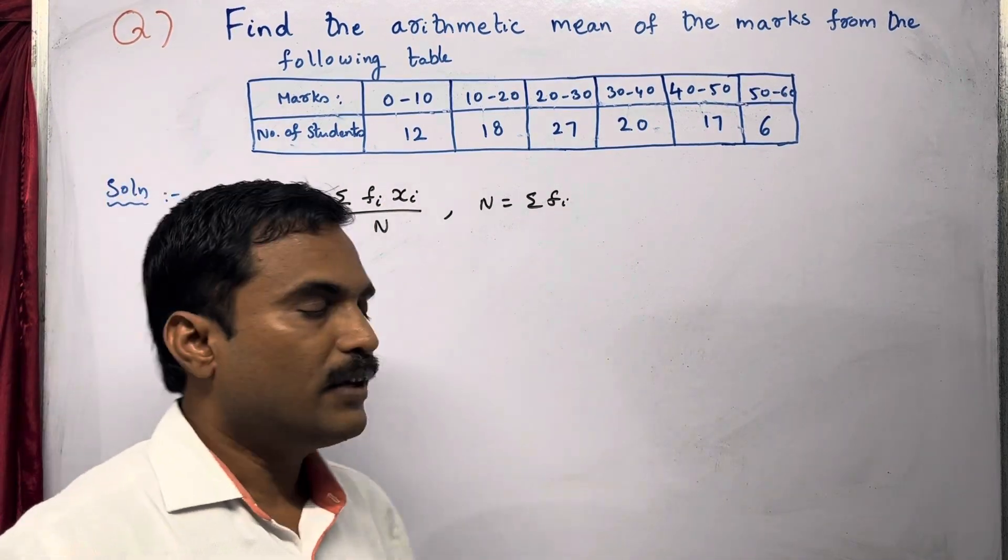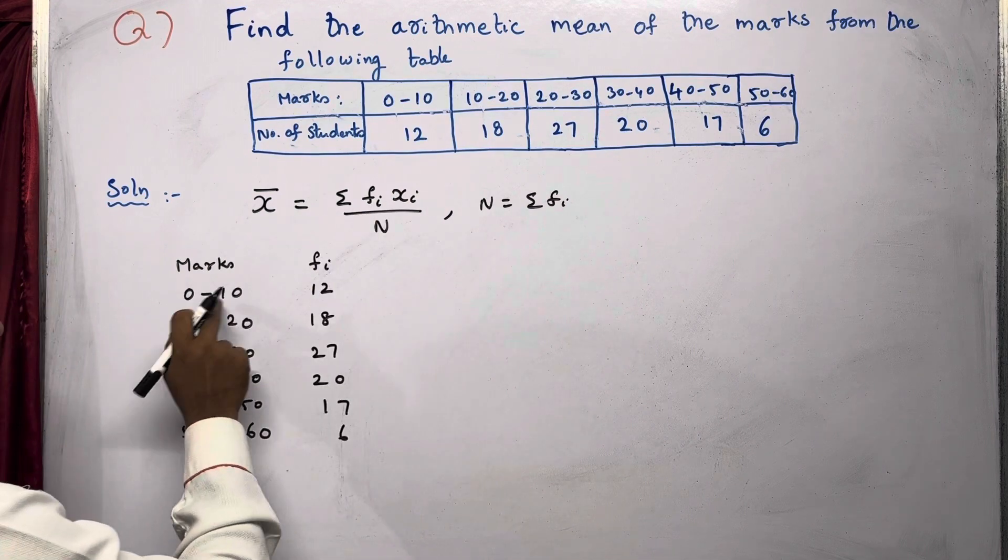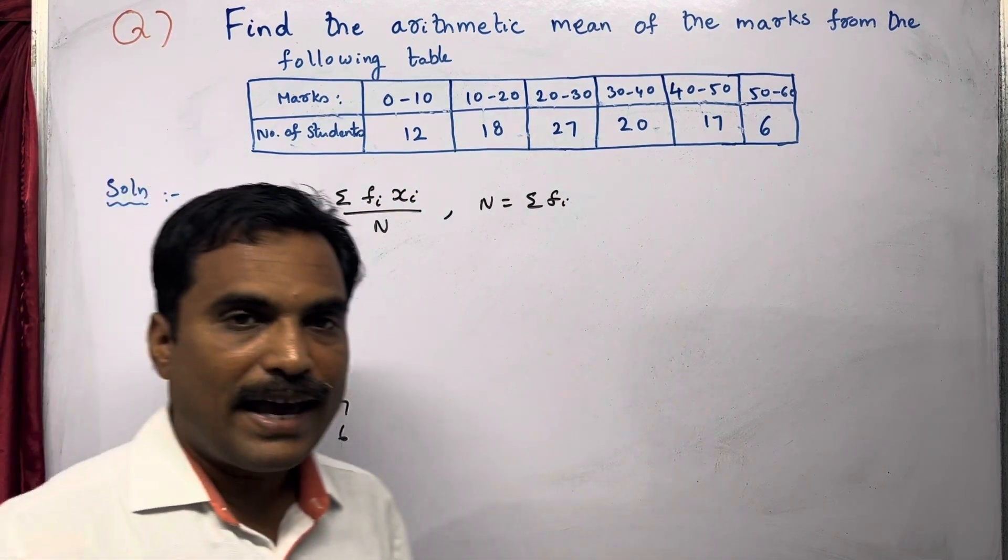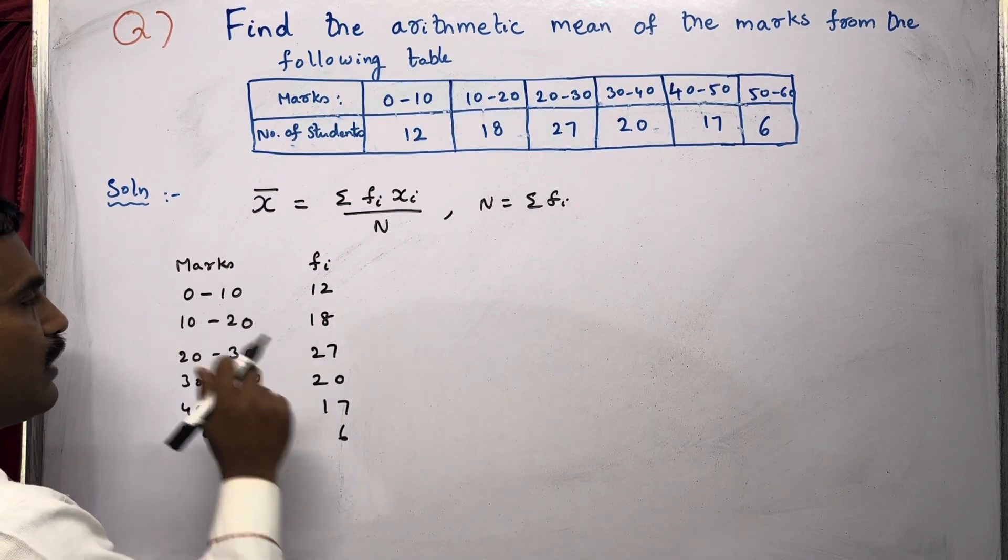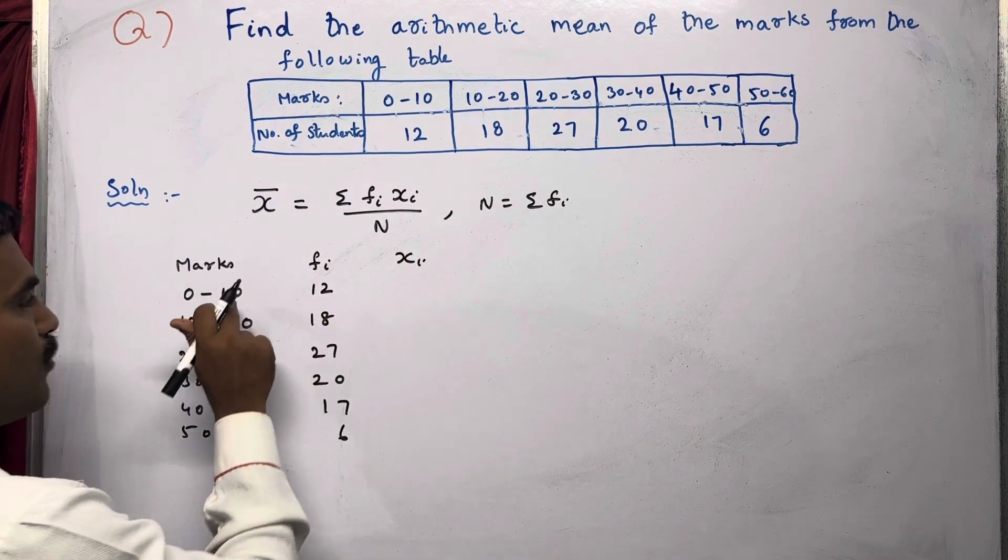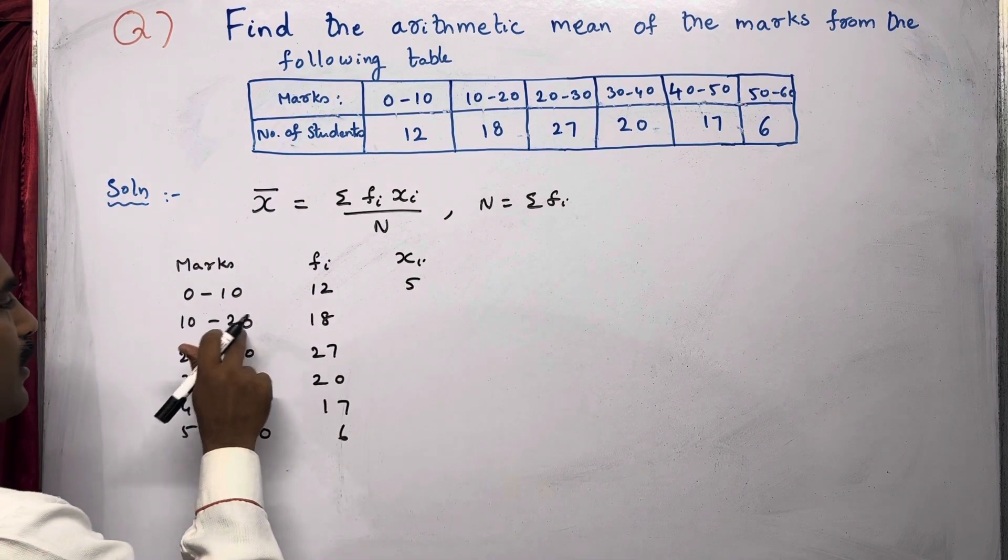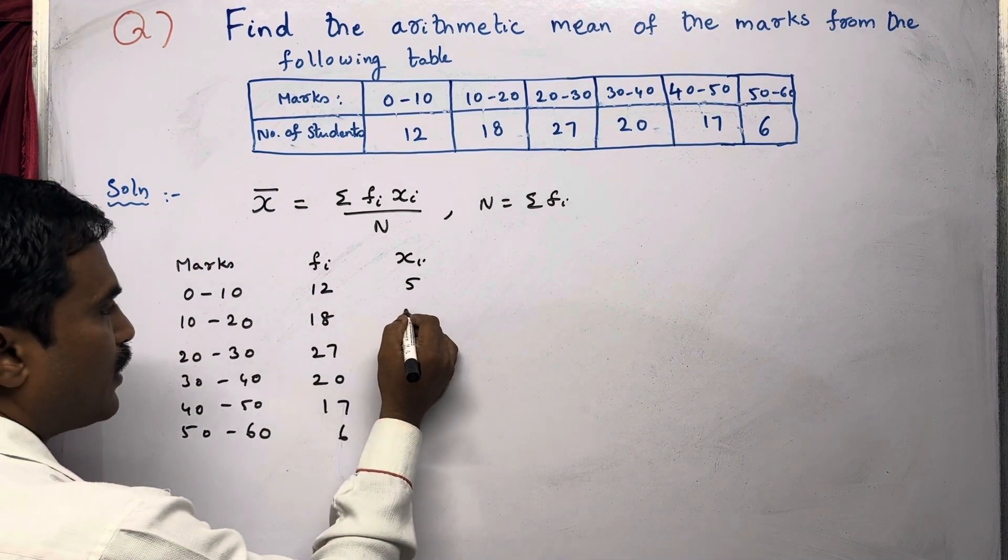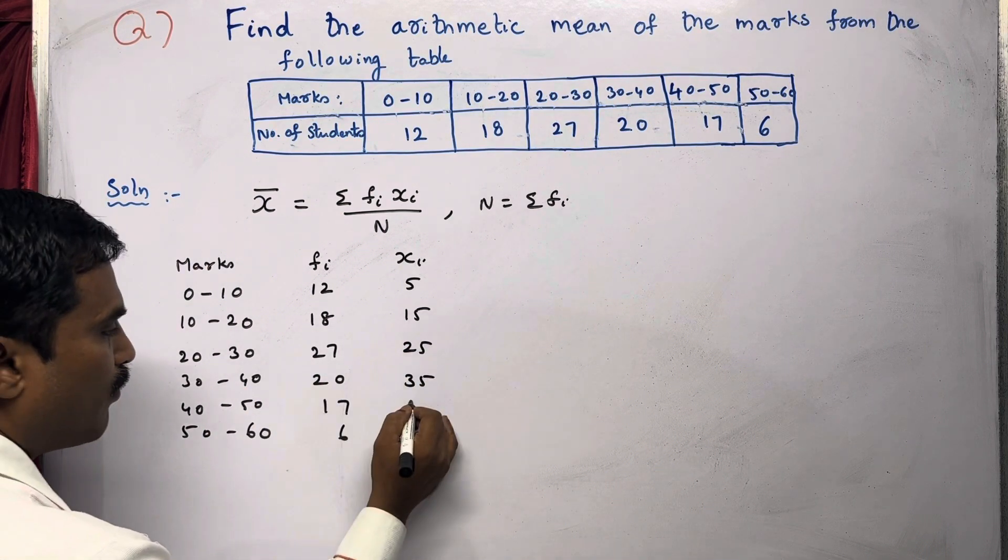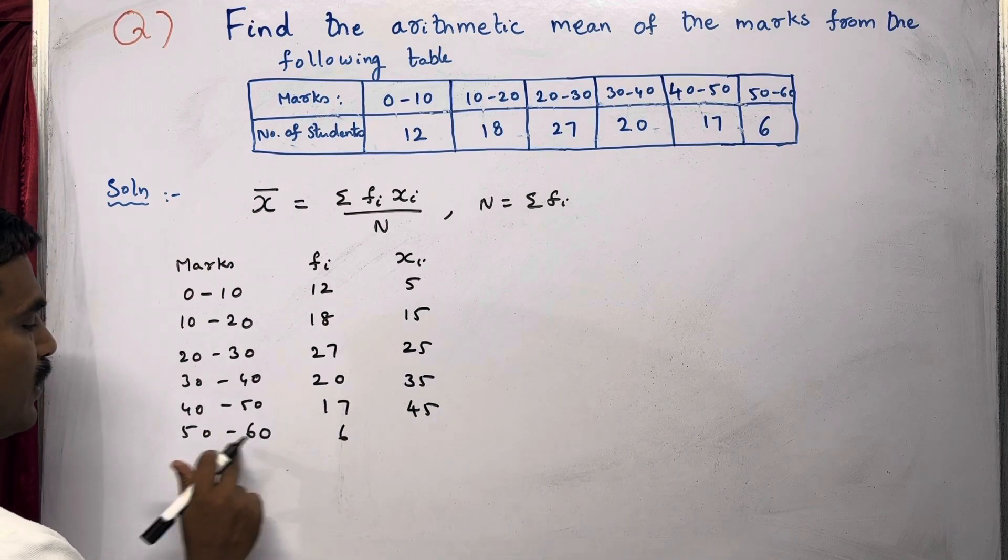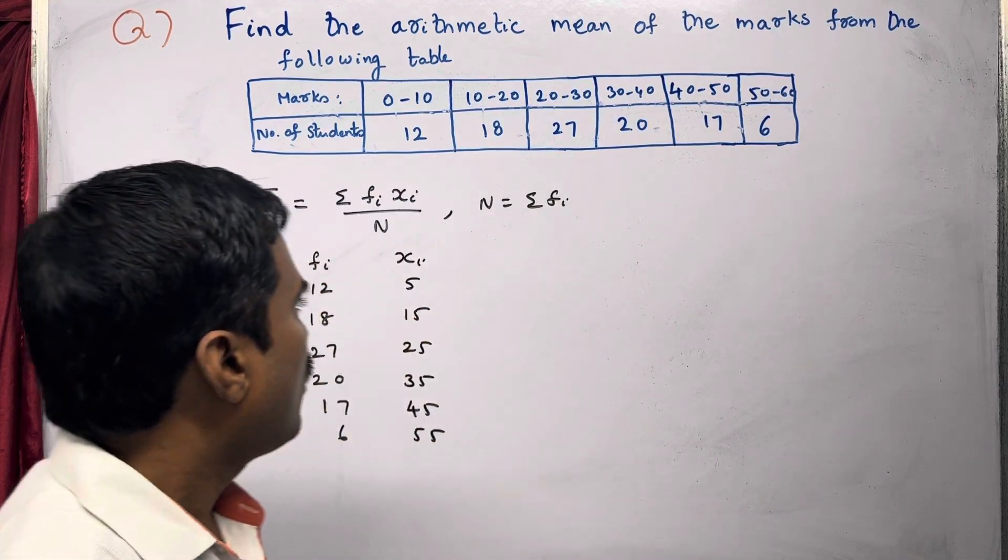Now, since we need to find Fi × Xi, we'll find the Xi. How to do this? Just find the midpoint of each interval. The midpoint of 0 to 10 is (0 + 10) / 2 = 5. Between 10 to 20, midpoint is 15. Here 25, here 35, here 45. Between 50 and 60, midpoint is 55. So we got all Xi values.